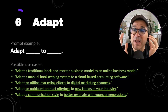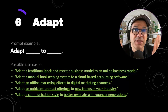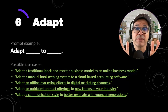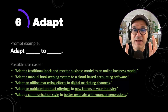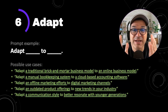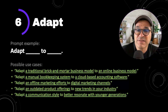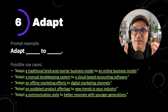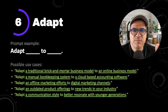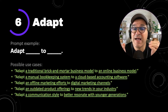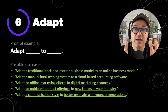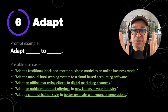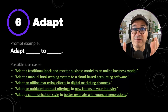ChatGPT prompt number six is adapt. Most people don't know that you could use ChatGPT this way. For these examples I was thinking adapt something old to something new. Get creative on how you could use this one because it can generate incredible results. Some possible use cases: adapt a manual bookkeeping system to a cloud-based accounting software, adapt an outdated product offering to new trends in your industry, or adapt a communication style to better resonate with younger generations. Play around with this and you'll be surprised at the results you can get out of a five-letter word.